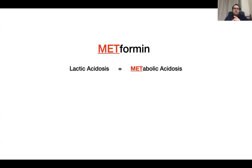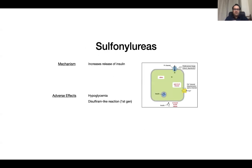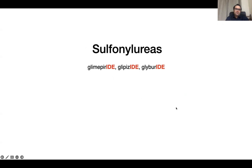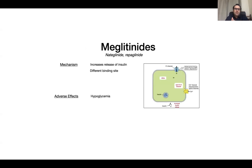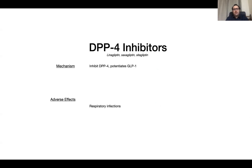Sulfonylureas increase the release of insulin by blocking the ATP-potassium channel, causing depolarization and opening of the calcium channel, releasing insulin. They cause hypoglycemia and weight gain. Second and third generation sulfonylureas include glimepiride, gliclazide, glipizide, and glyburide. Meglitinides such as repaglinide are similar to sulfonylureas but have a shorter half-life.